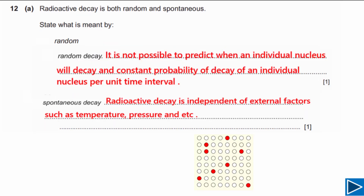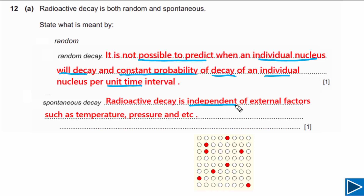For the written answer: for random decay, write 'It is not possible to predict when an individual nucleus will decay' and 'constant probability of decay of an individual nucleus per unit time.' For spontaneous decay, write 'radioactive decay is independent of external factors such as temperature, pressure, and neighboring nuclei.' It doesn't matter where a nucleus is in the sample — it will decay when its time comes.